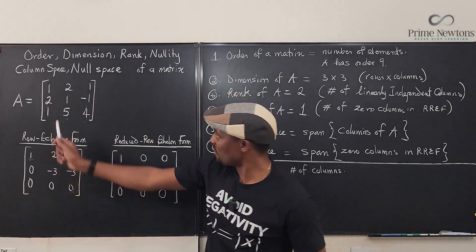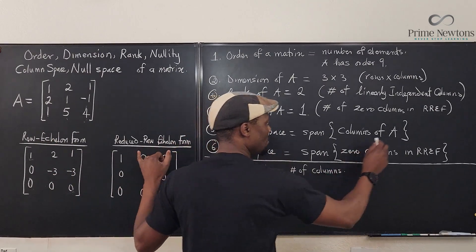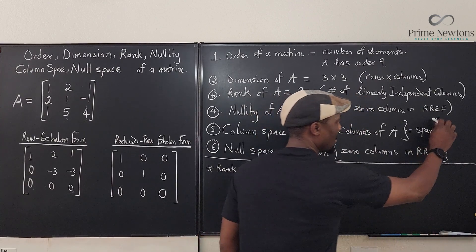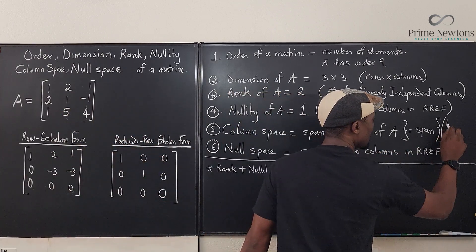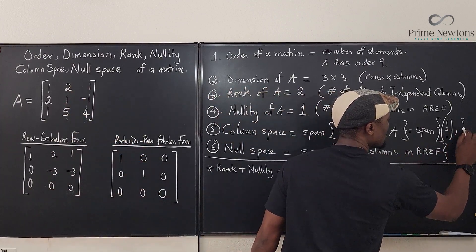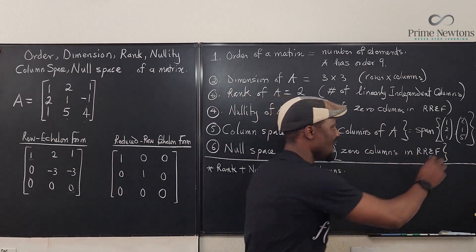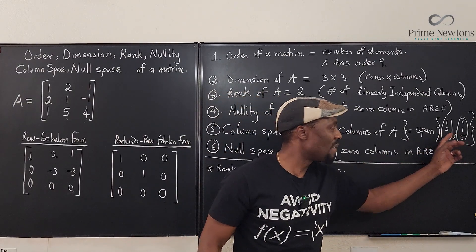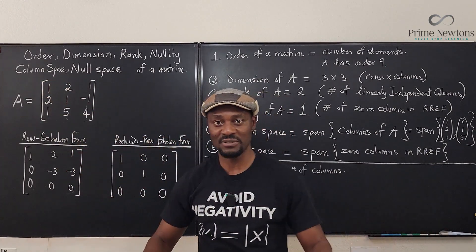So the column space could be written as the span of the set of these two vectors: the first vector [1, 2, 1] and the second vector [2, 1, 5]. The span of this set of vectors is the column space. Whatever you can do by combining these two will generate any three-by-three matrix of this type.